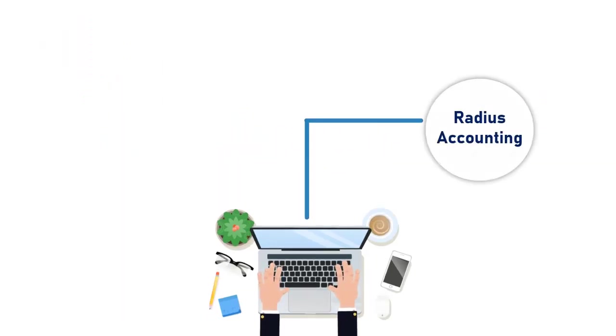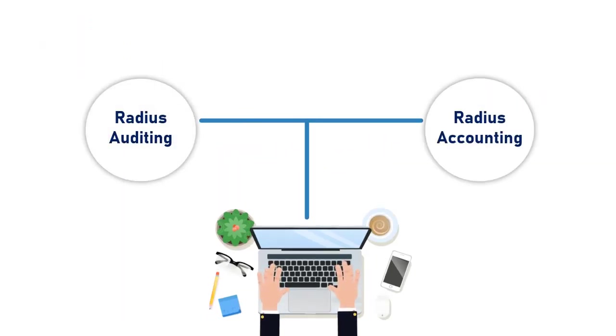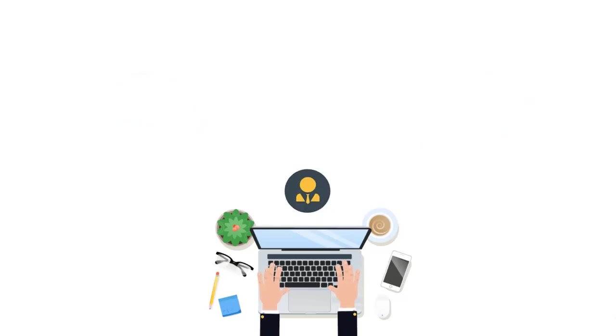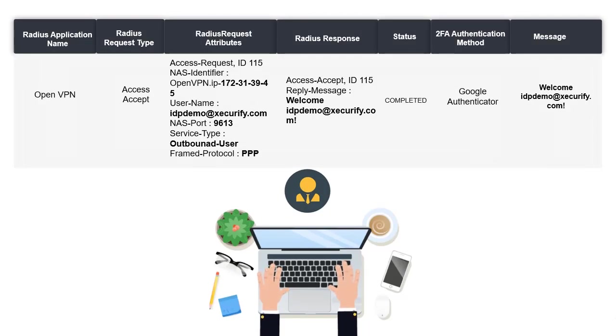Additional features like RADIUS Accounting and RADIUS Auditing are also included in the miniOrange feature stack. This allows the administrator to keep track of the VPN usage of the users, as well as all of their login events.